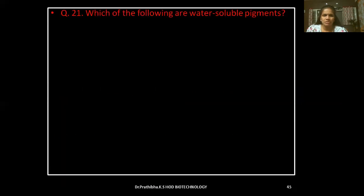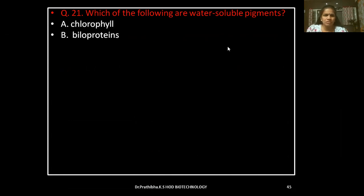Question 21: Which of the following are water-soluble pigments? Options: Chlorophyll, Biliproteins, Carotenoids, or Fucoxanthin.